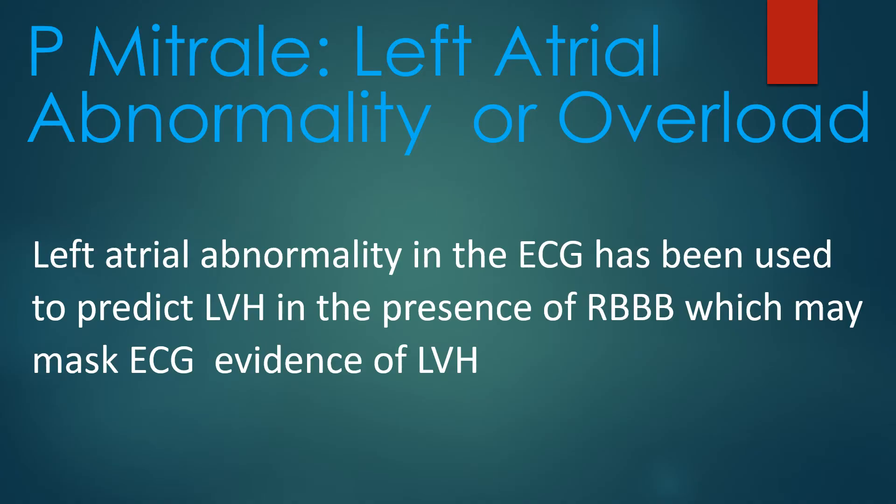Left atrial abnormality on ECG has been used to predict left ventricular hypertrophy in the presence of right bundle branch block, which may mask electrocardiographic evidence of left ventricular hypertrophy.